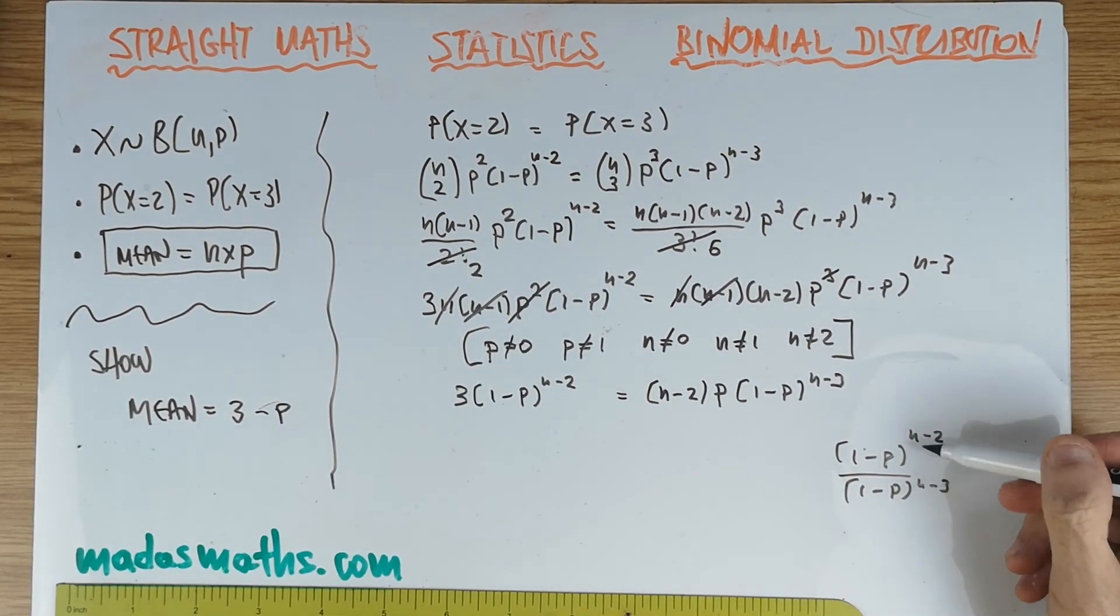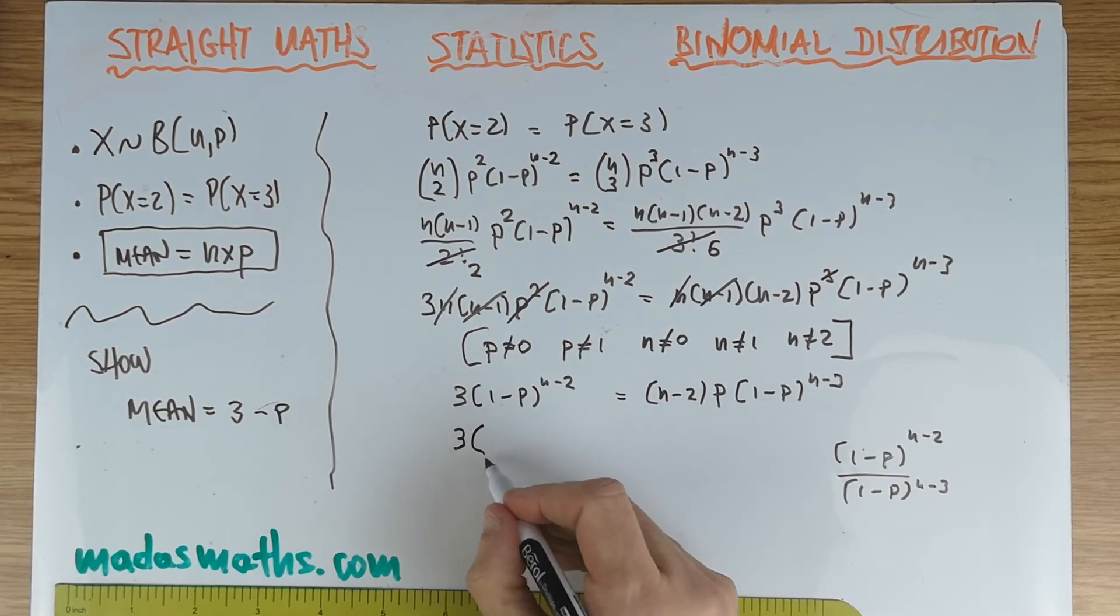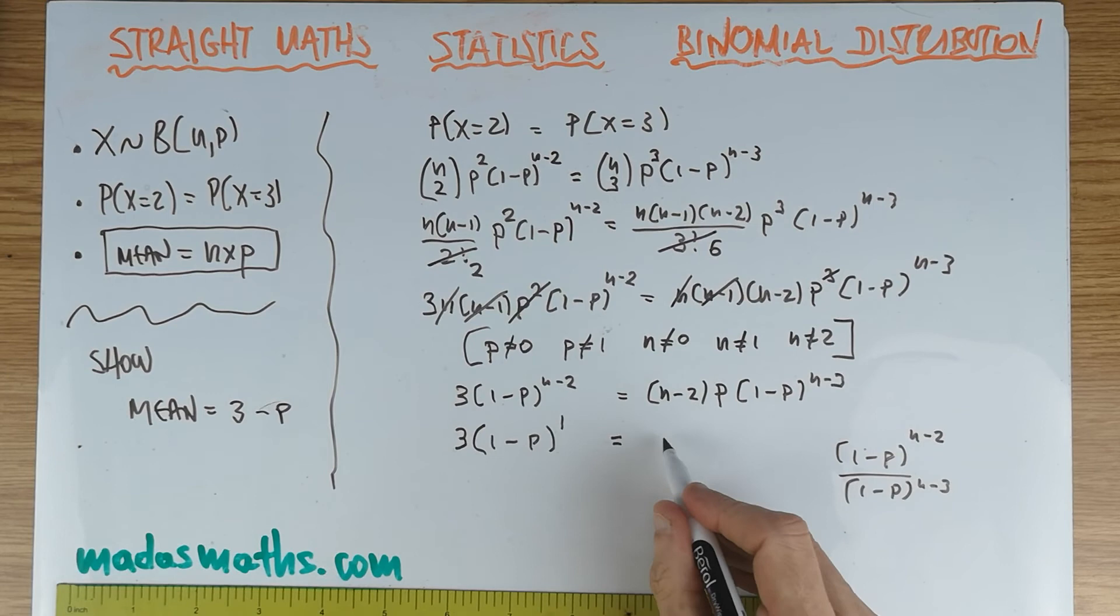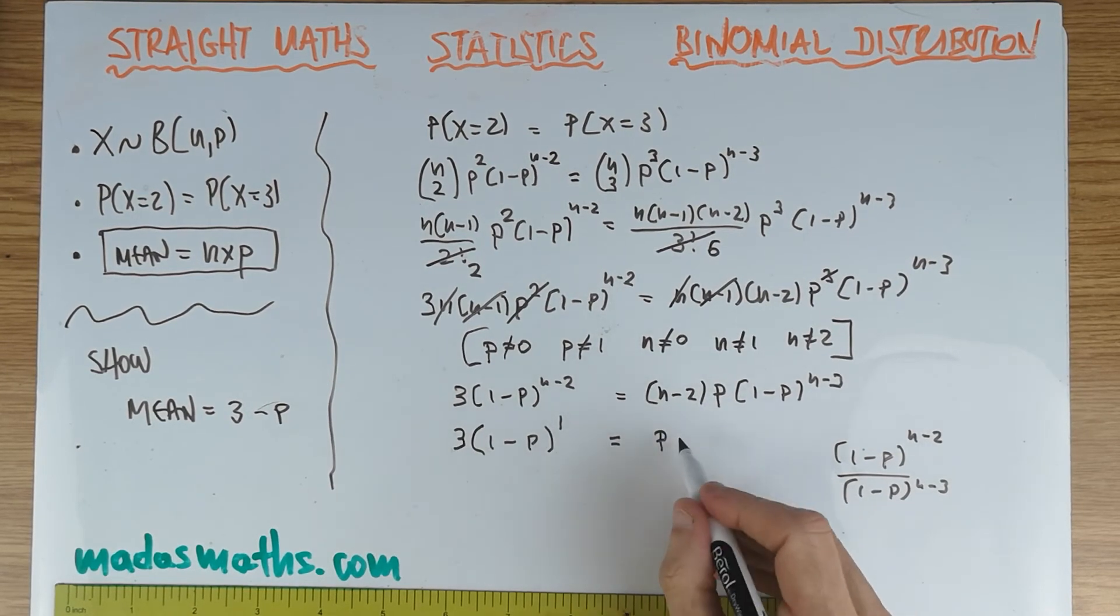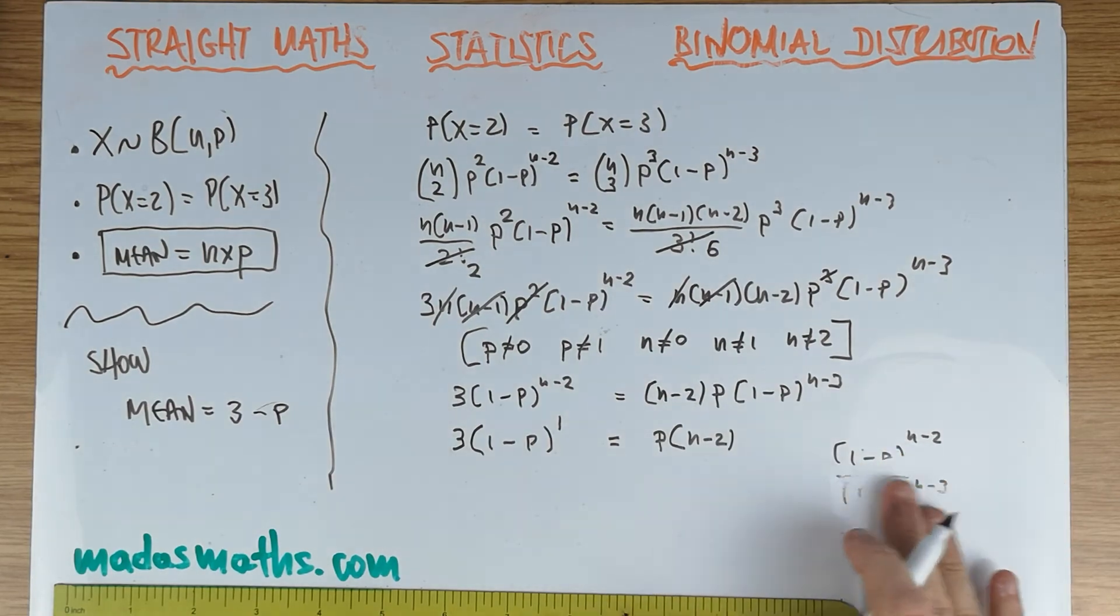This is smaller than that if n is a positive integer. What will happen is one minus p to the n minus two divided by one minus p to the n minus three. Dividing, subtracting powers, n minus n will cancel, minus two minus minus three gives us this bracket on the left to the one. So it's going to be three. I'll put the one for completeness, and we got the p at the front. And that of course has completely gone.